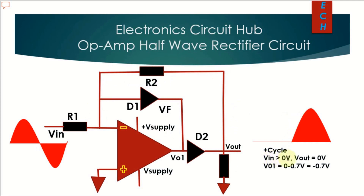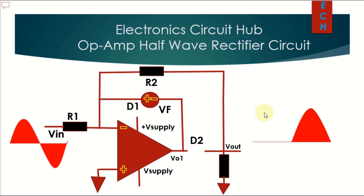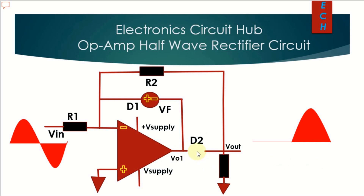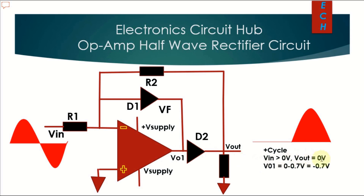For the positive half cycle, when V-in is greater than zero volts, the output would be zero. For the positive half cycle, diode D1 conducts. You will get approximately minus 0.7 volts at V-O1, so applying KVL: zero minus 0.7 volt equals minus 0.7 volt. This is more negative than zero volts, so D2 is reverse biased and open circuit, giving zero output.